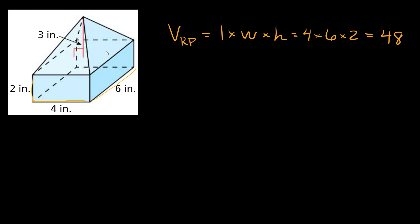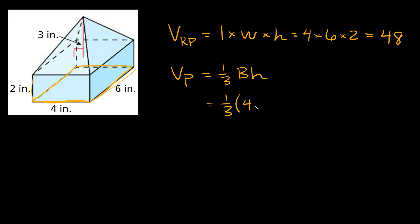Now we need to find the volume of the pyramid on top. The volume of any pyramid is equal to one-third the base times the height. So the volume of this pyramid is going to be equal to one-third. The area of the base of the pyramid is the exact same rectangle that we have down here, so the area of this rectangular base is just 4 times 6. And then we multiply by the height of the pyramid, which is this vertical distance given as 3 inches.